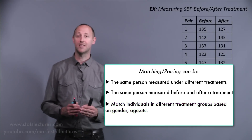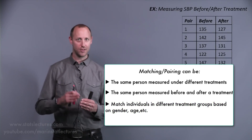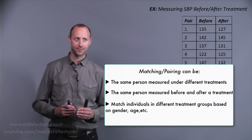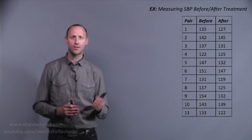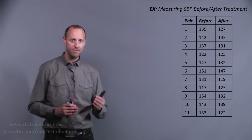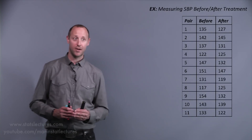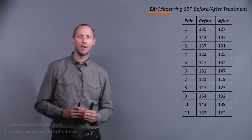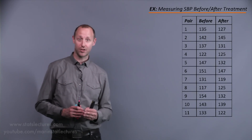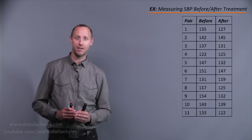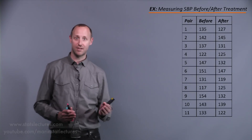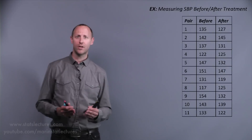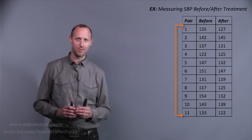The idea behind this matching is to make the groups as comparable as possible. We're going to take a look at an example — the simplest form of paired data, the before-and-after experiment. We'll look at individuals having their systolic blood pressure measured before receiving some treatment and then measured again after. We'll use a simple data set with only 11 observations.